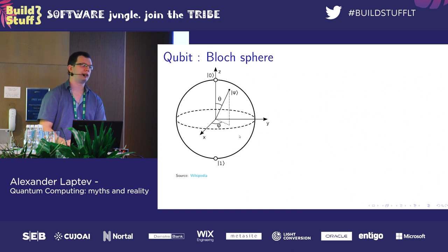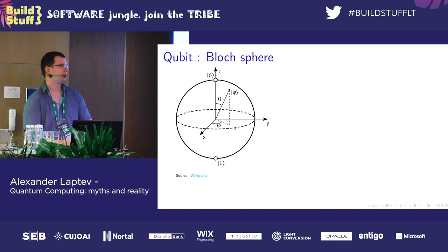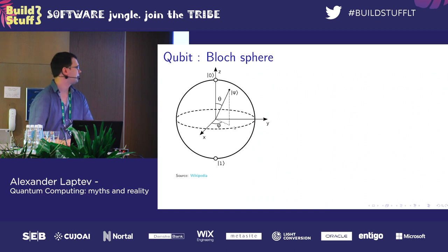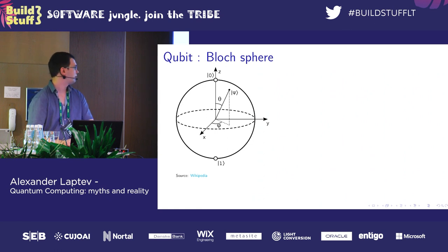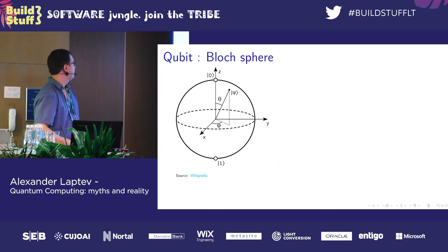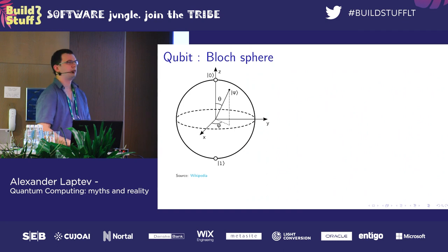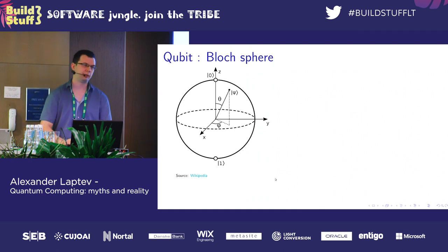Different algorithms have different approaches to getting randomness — some ask users to move the mouse randomly, some use time, and random.org uses radio waves in the atmosphere. With a single qubit, you don't need any of that; you get randomness just from the power of the universe. Also, this randomness isn't limited to 50/50 probabilities — you can set up states giving 25/75, 60/40, or 20/80 — any probabilities you want.